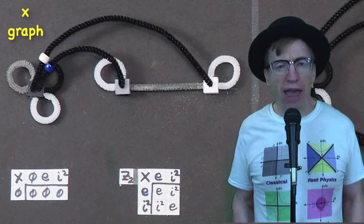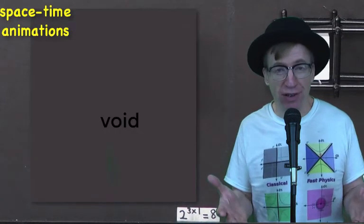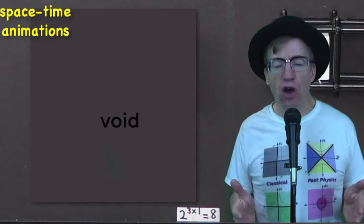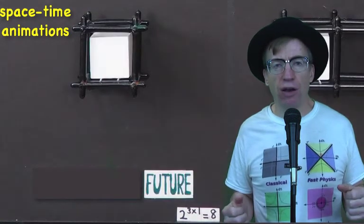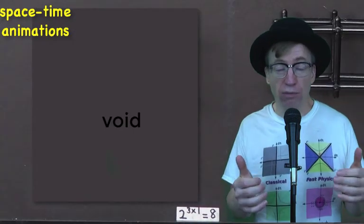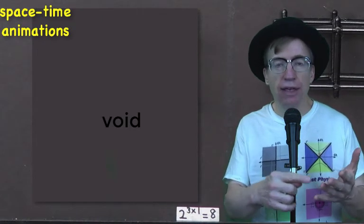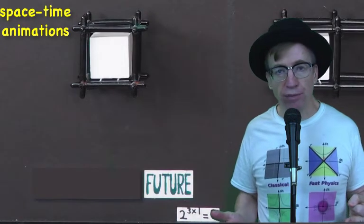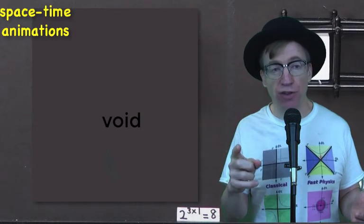The bottom row is my animation of real numbers, done in a discrete way. If it's zero, there's nothing there. If there's a one, you see a white block — and it can be in the past, the now, or the future. How many possibilities are there? Only eight, because that is 2 to the third.